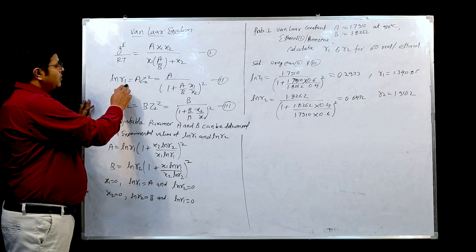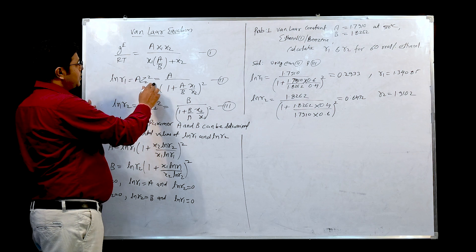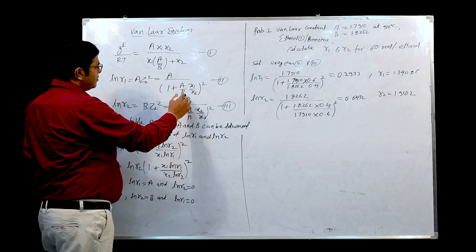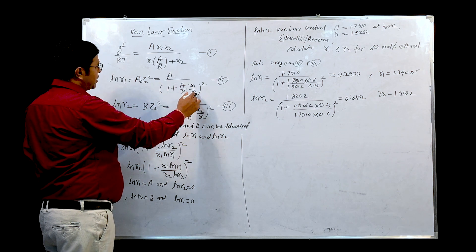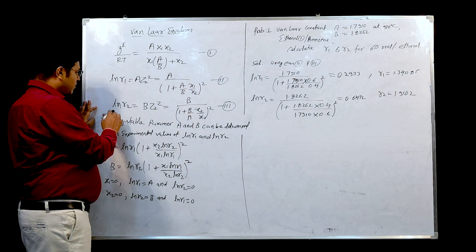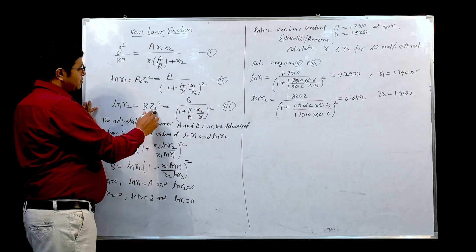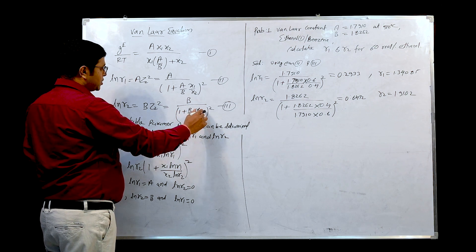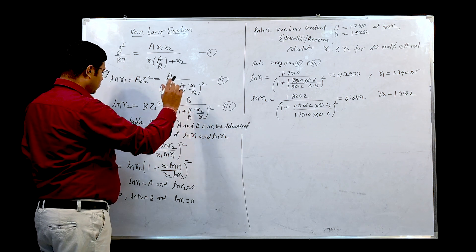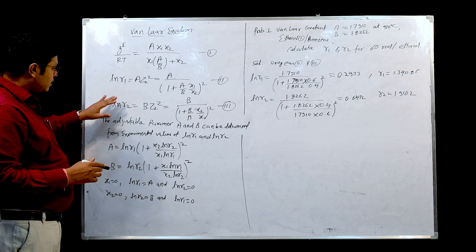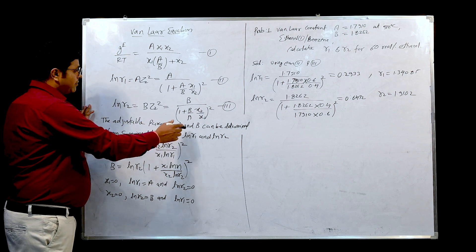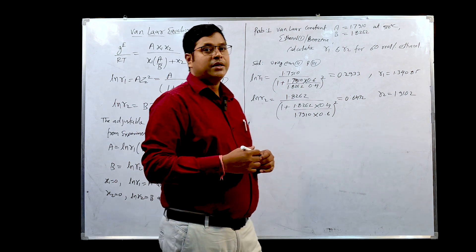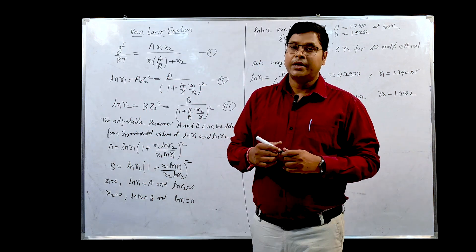Here, ln γ₁ = A·z₂² = A upon (1 + (A/B)·(x₁/x₂))². Similarly, ln γ₂ = B·z₁² = B upon (1 + (B/A)·(x₂/x₁))². As explained, A and B are the adjustable parameters that can be determined experimentally.